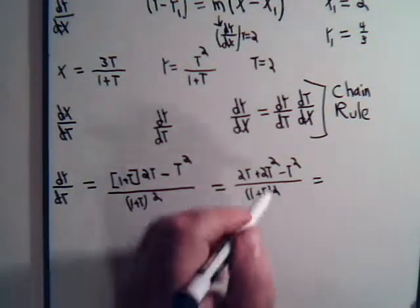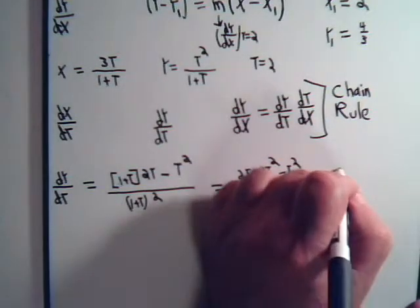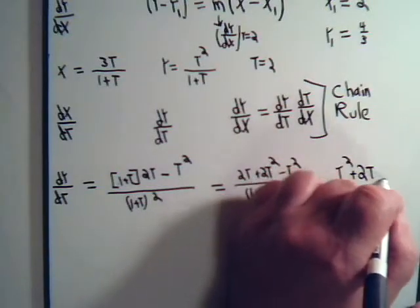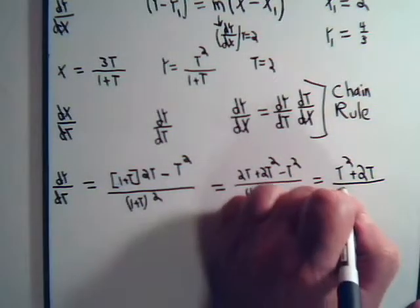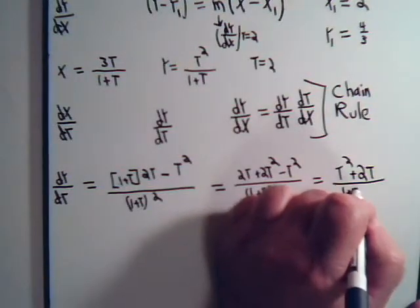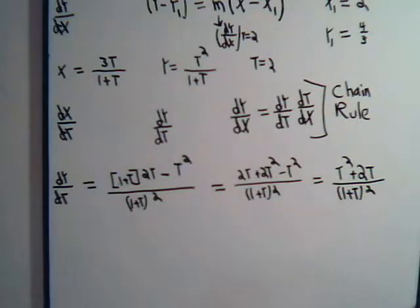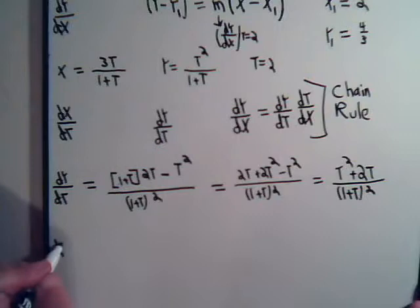This will give us t squared plus 2t divided by 1 plus t squared. So that's our dy/dt, and we'll also figure out what dx/dt is, using the quotient rule.